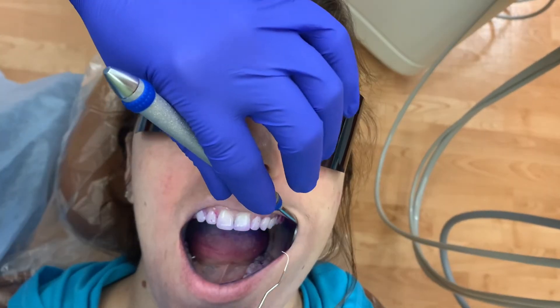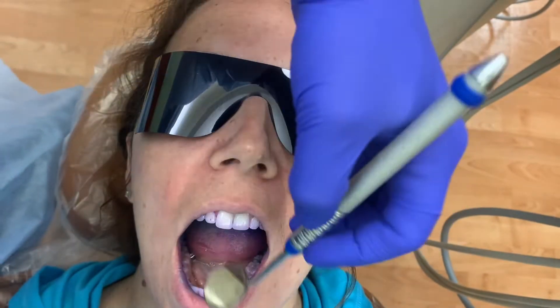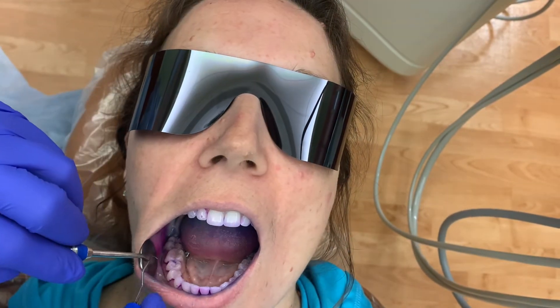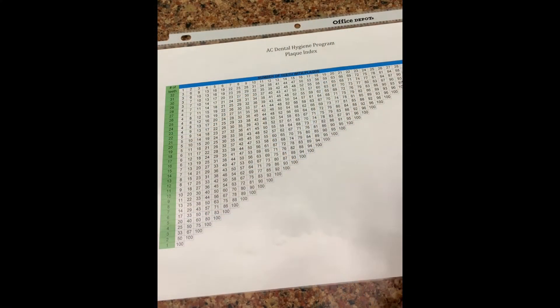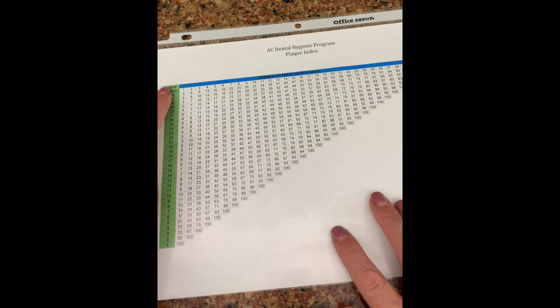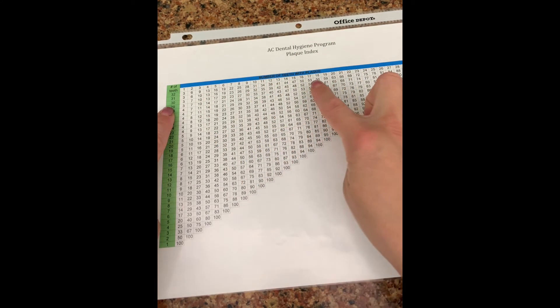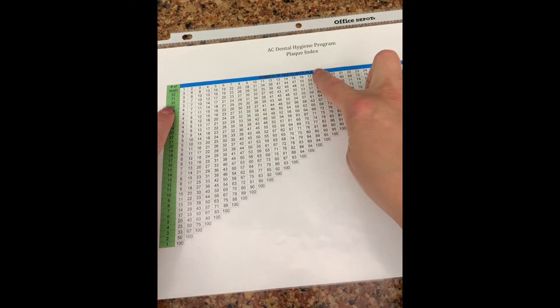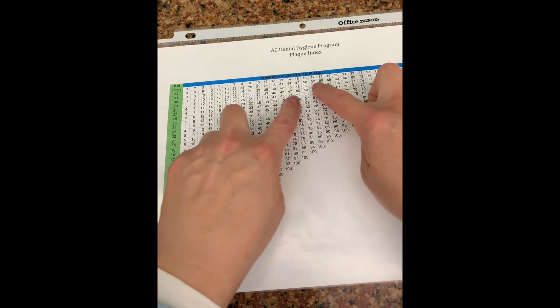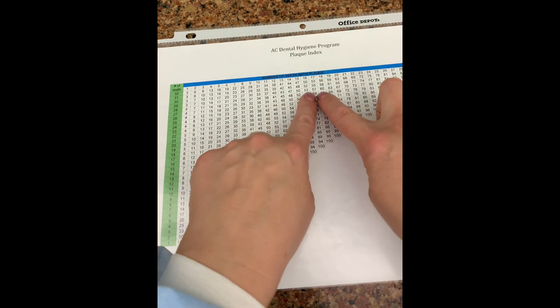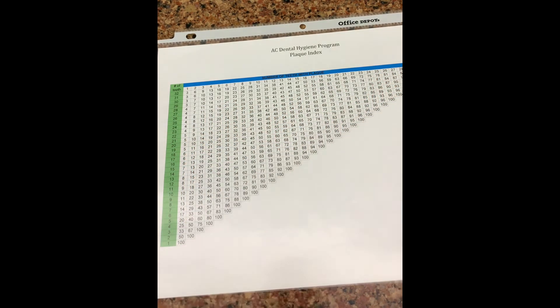To obtain a plaque index percentage, you'll need to count up the areas in which you see plaque on the teeth. Using your plaque index chart, find the number of teeth present in the patient's mouth on the left side in green. Then find the number of teeth that had stained plaque present in blue across the top. Find where the two numbers meet — this is your plaque index percentage. Include this in your progress note.